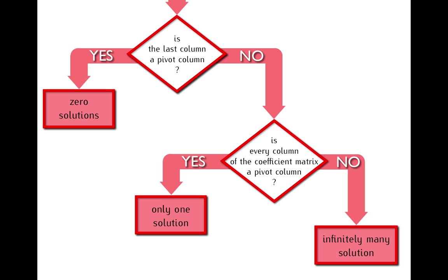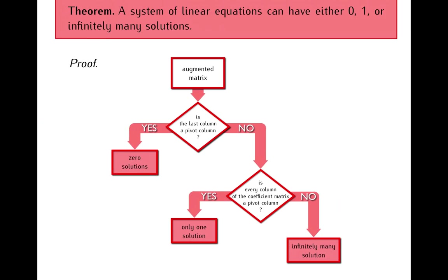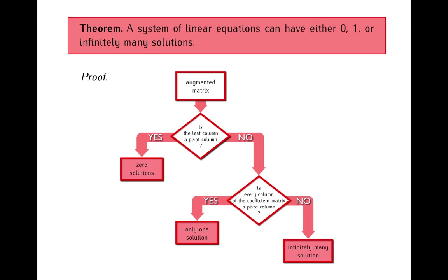As you can see, this covers all possibilities. So this completes the proof of the theorem: every system of linear equations will have either zero, one, or infinitely many solutions. These are the only options.